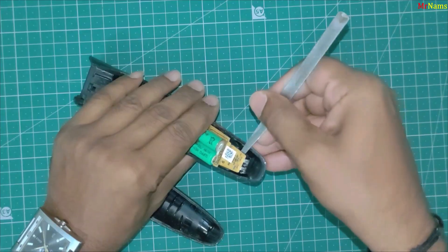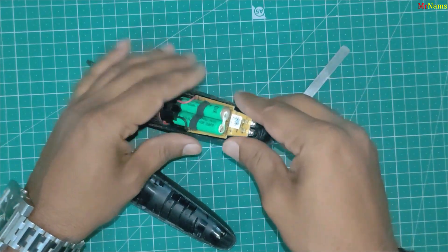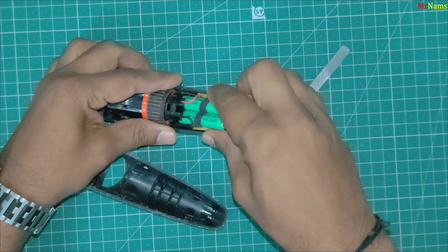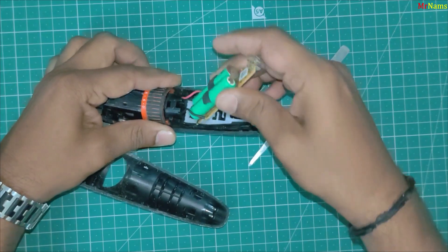Once opened, locate the PCB printed circuit board. Desolder the power wires from the PCB to free it.